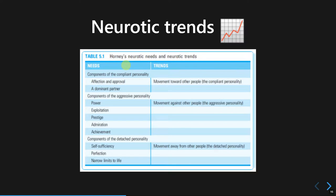The most dominant needs of the compliant personality are affection, approval, and also a dominant partner, because this person is highly submissive and needs a dominant partner to fulfill their desires. The second type is the aggressive personality. Instead of submitting to other people, this person aggressively seeks influence from others. There are five different neurotic needs dominant in this personality: power, exploitation, prestige, admiration, and achievement. This person appears very ambitious and competitive to establish their superiority over others.